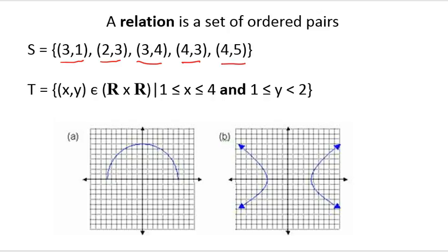The relation T, on the other hand, is an infinite relation. T is the set of all points (x, y), where x and y are real numbers, such that 1 ≤ x ≤ y and 1 ≤ y < 2. So S is finite, but T is infinite with an infinite number of elements. These bottom two graphs are just two visual representations of relations — the set of all points on the blue curves, as ordered pairs, would be the elements in the relation.